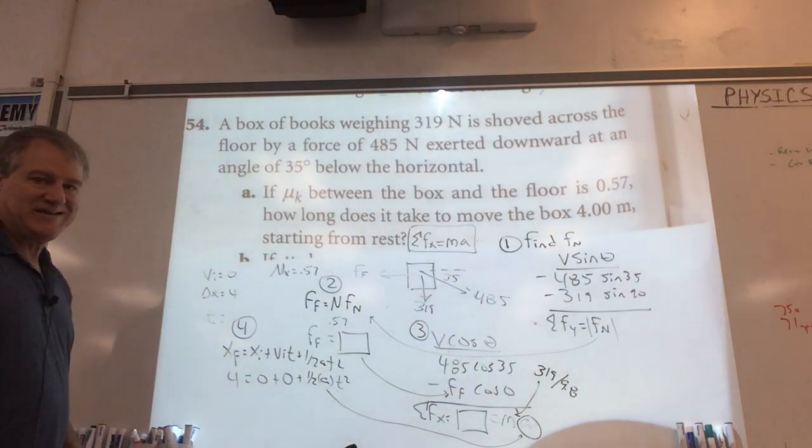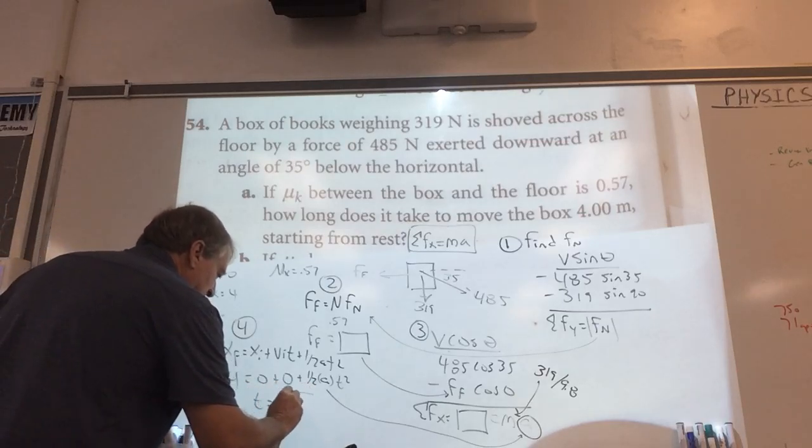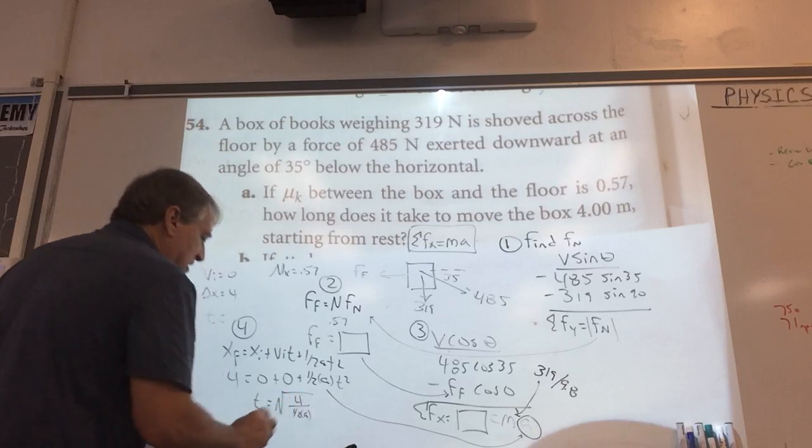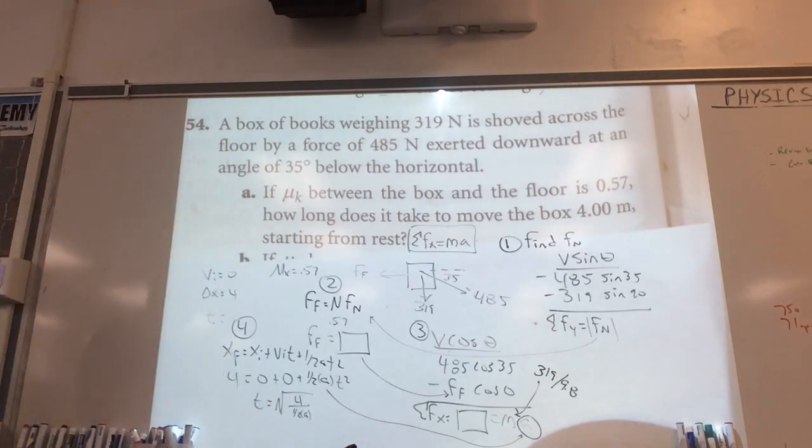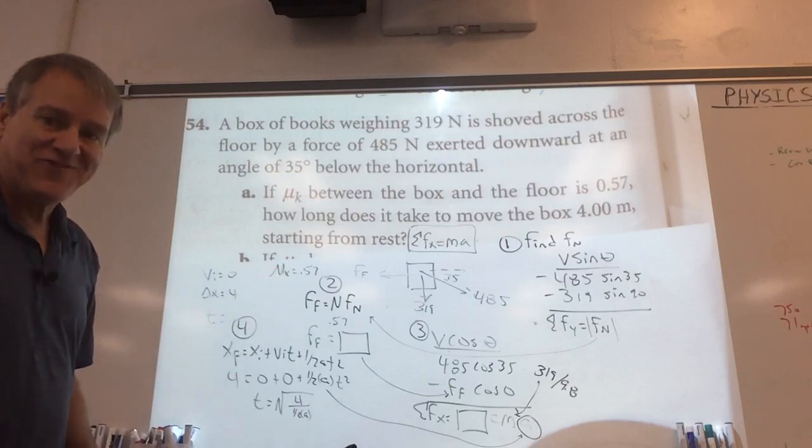So look how easy it is to find t. t is equal to the square root of 4 over half of whatever a is over there. And that's going to give me the time it takes for this box to slide 4 meters. And that is letter A on 54.